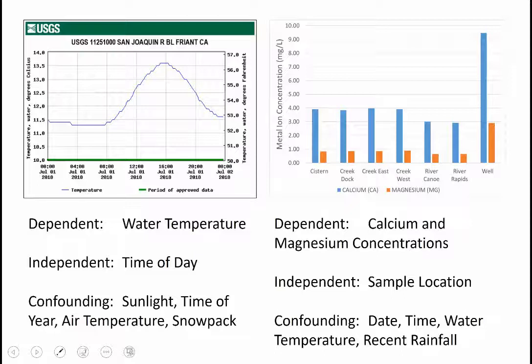There's a lot of parameters that could have affected the water temperature being measured. Was it sunny that day? What was the air temperature? What time of year is it? Was there a lot of snowpack this year melting and coming down into Friant Reservoir that's lowering the temperature? Those are parameters that have the potential to impact water temperature that I'm not interested in measuring.